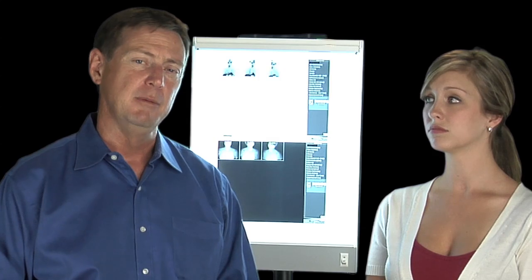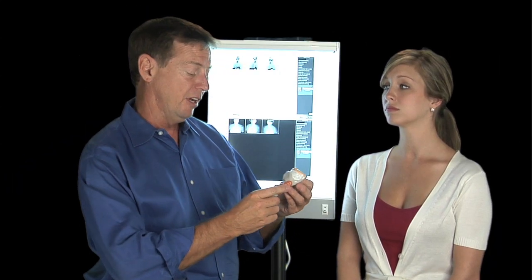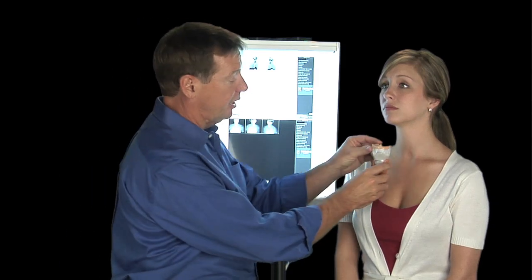Let's discuss parathyroid anatomy and why parathyroid surgery can be so tricky. Here's a model of voice box, trachea and thyroid. This sits in your neck right here.